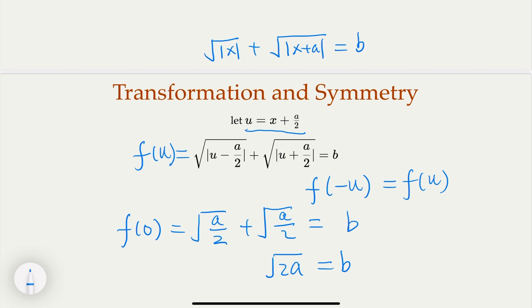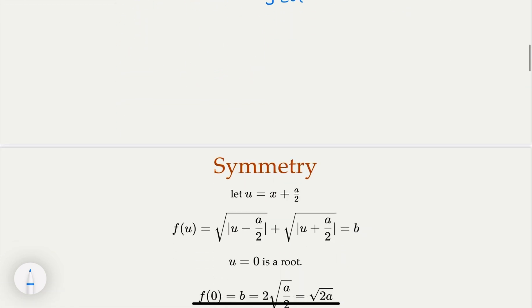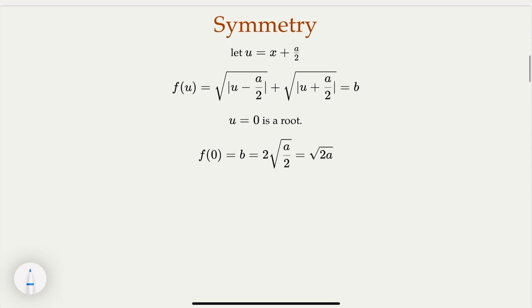That's how a and b are related. Now we need to find a or b in order to calculate a plus b. Okay, so here is the summary here. By using the variable substitution, we are dealing with a symmetric equation here. And we also know that f(0) is the root, so we have this equation. Now what?